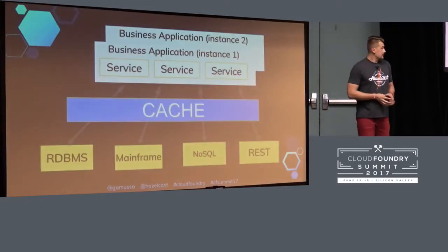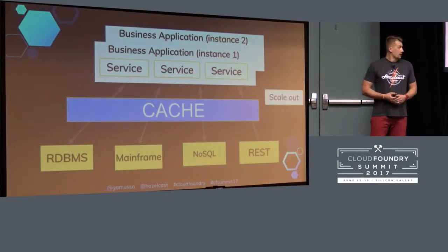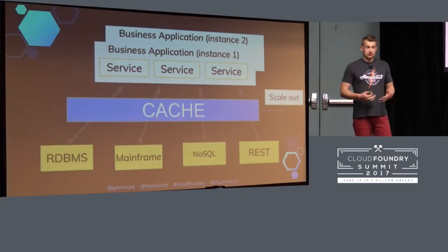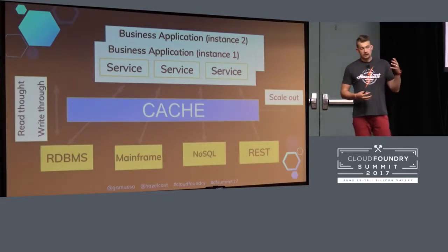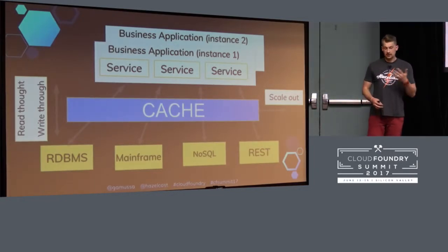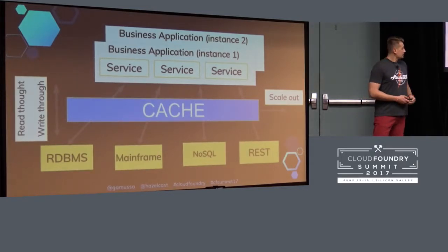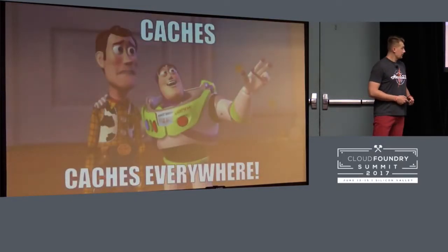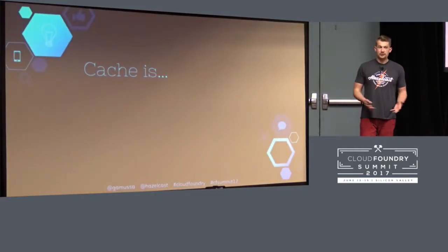My proposal: let's cache everything. In this case the cache sits in between and allows the application to scale out — if it's a distributed cache. This provides the pattern called read-through and write-through caching, meaning you go to the cache, and the cache will check if the data is there. If not, it fetches it for you; if it is, it simply retrieves it.